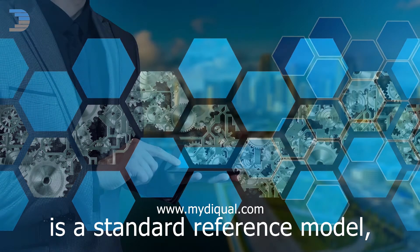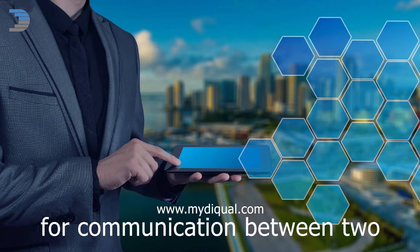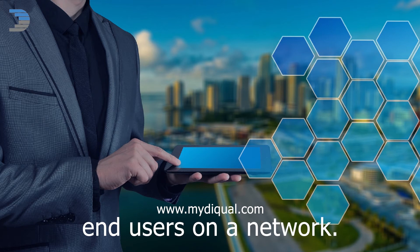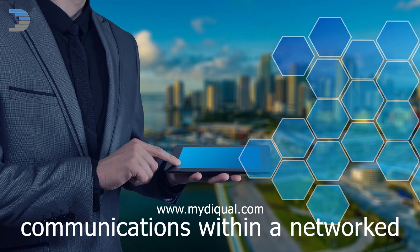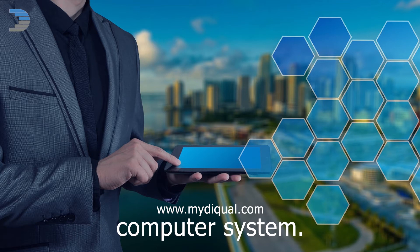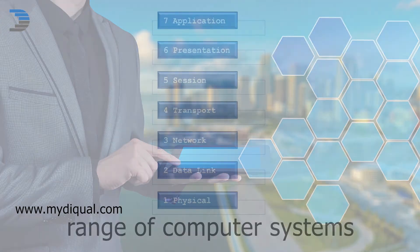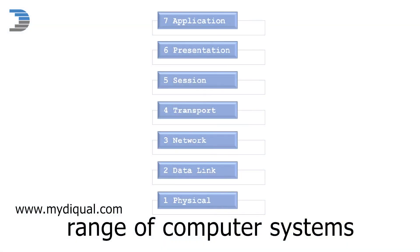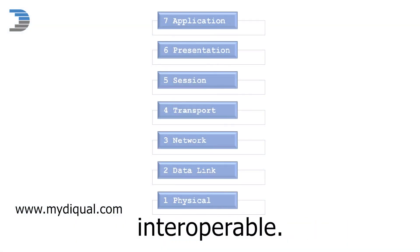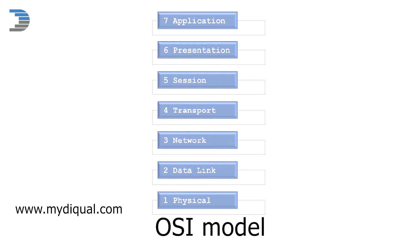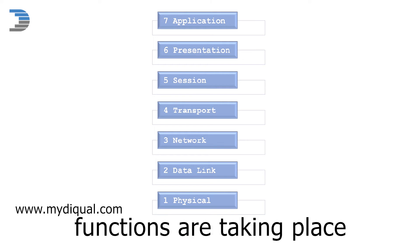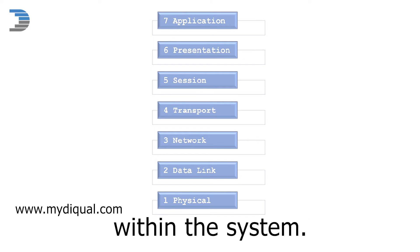The OSI model is a standard reference model for communication between two end users on a network. It characterizes and standardizes communications within a network computer system. OSI makes a diverse range of computer systems interoperable. There are seven layers within the OSI model that help us visualize where functions are taking place within the system.